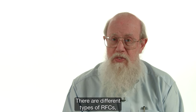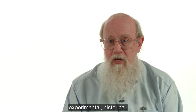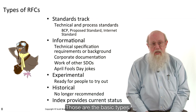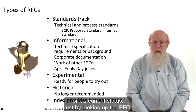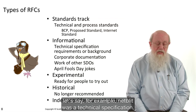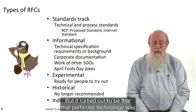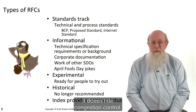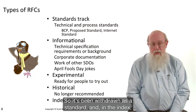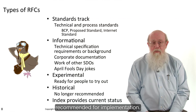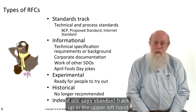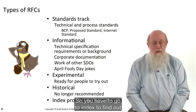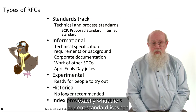There are different types of RFCs: standards track RFCs, informational RFCs, experimental, and historical — those are the basic types. Note that you cannot tell the exact type of an RFC or its current status just by looking at the RFC itself. For example, NetBlit was a technical specification, but it turned out to be very detrimental to the internet because it doesn't do congestion control, so it's been withdrawn as a standard. In the index it says this is historical and not recommended for implementation. But because we never change the RFCs themselves, it still says 'standards track' in the upper left-hand corner of the RFC. So you have to go to the index to find out exactly what the current status is.